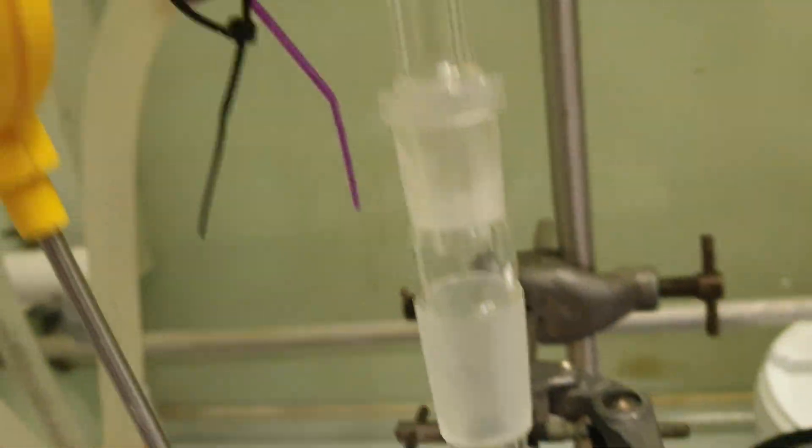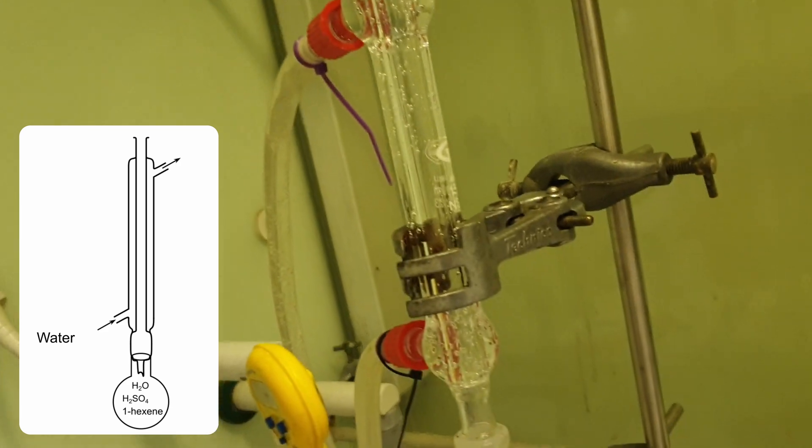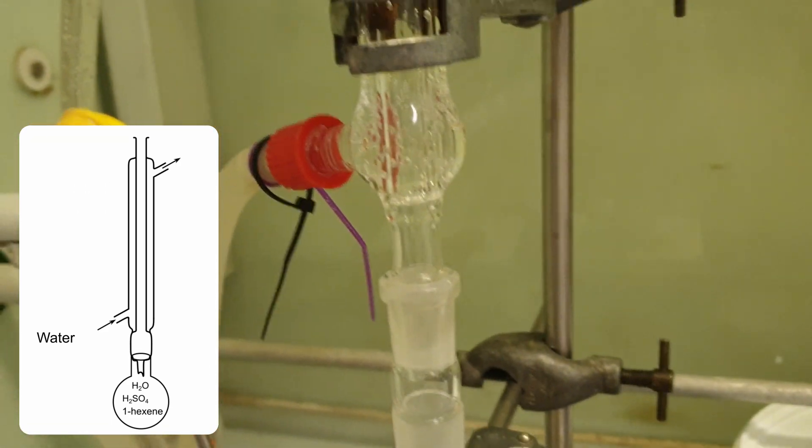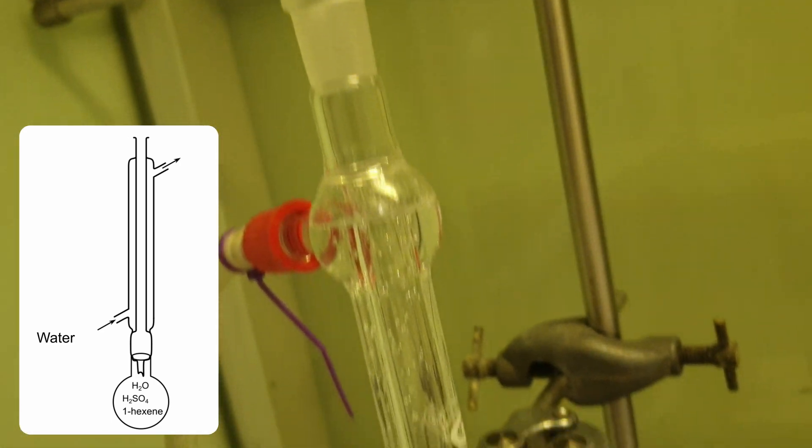Here I'm showing off my reaction setup, it's just a reflux column. This allows you to boil the reaction mixture without losing all the solvent because it gets condensed by the water jacket back into the reaction vessel.